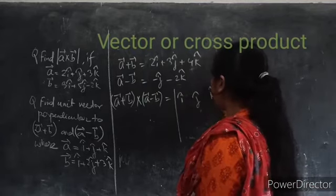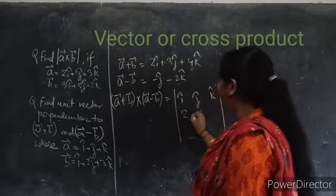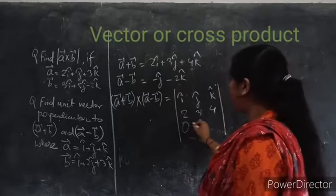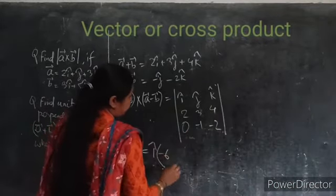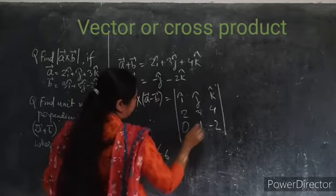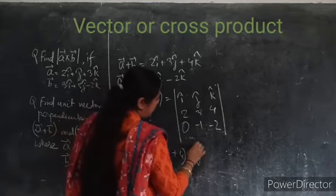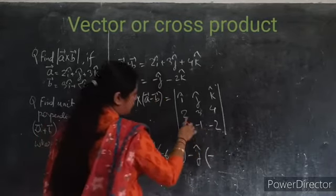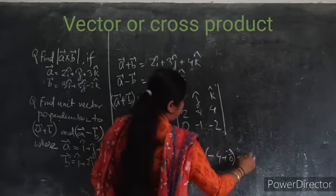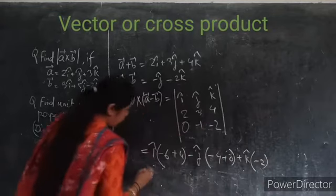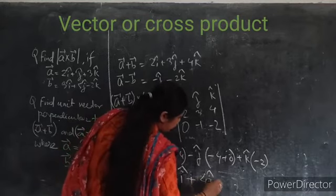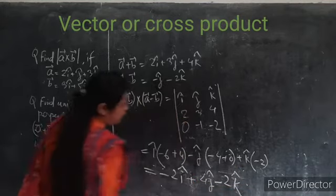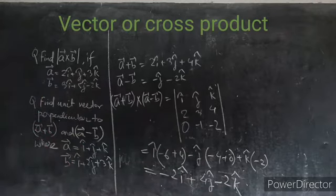So we write I, J and K. The coefficients for A plus B are 2, 3, 4 and for A minus B are 0, minus 1, minus 2. The i component gives minus 6 plus 4. Minus j cap gives minus 4 plus 0. Plus k cap gives minus 2. So what we are getting is minus 2i cap plus 4j cap minus 2k cap. This is the C vector: minus 2i cap plus 4j cap minus 2k cap.